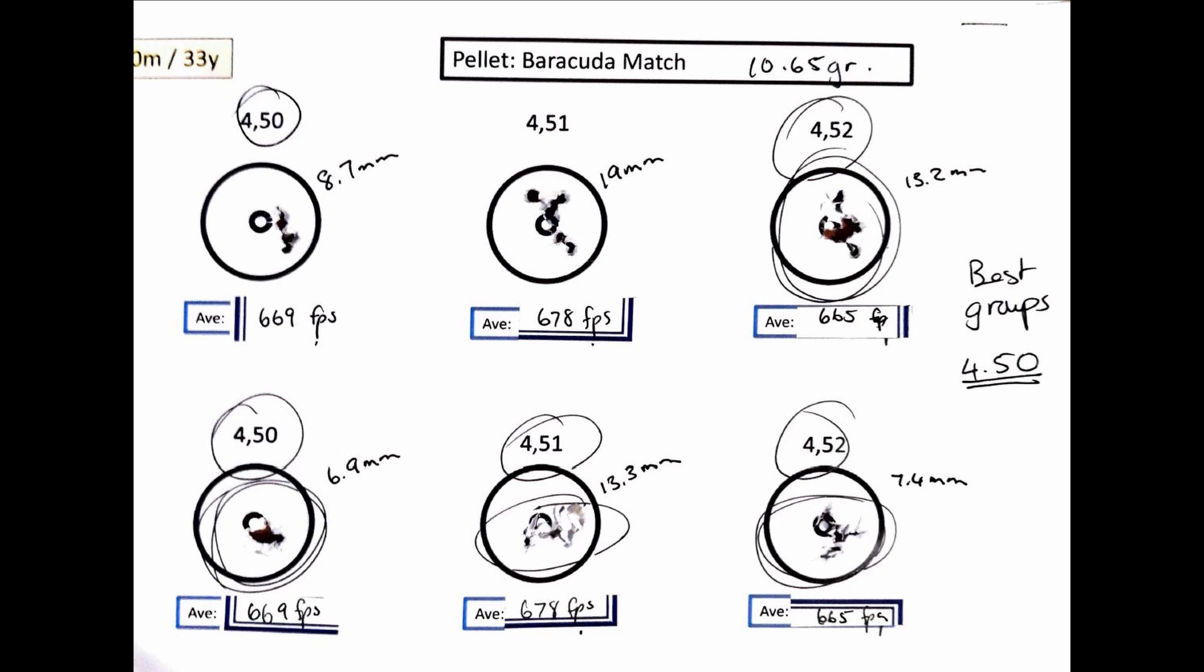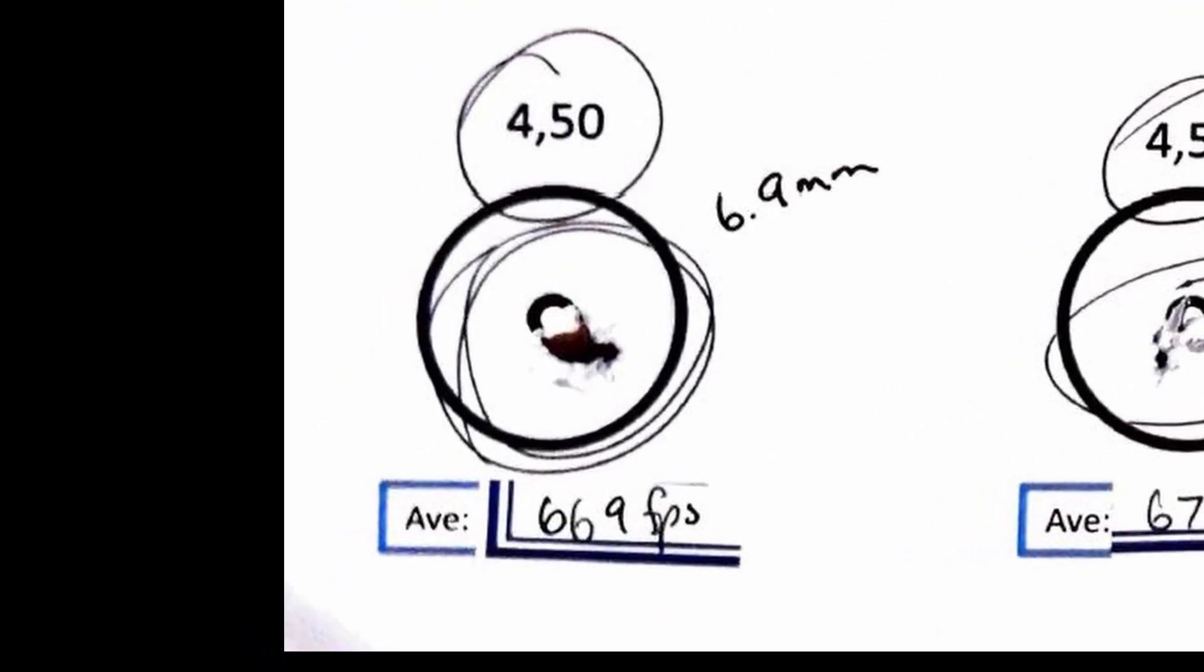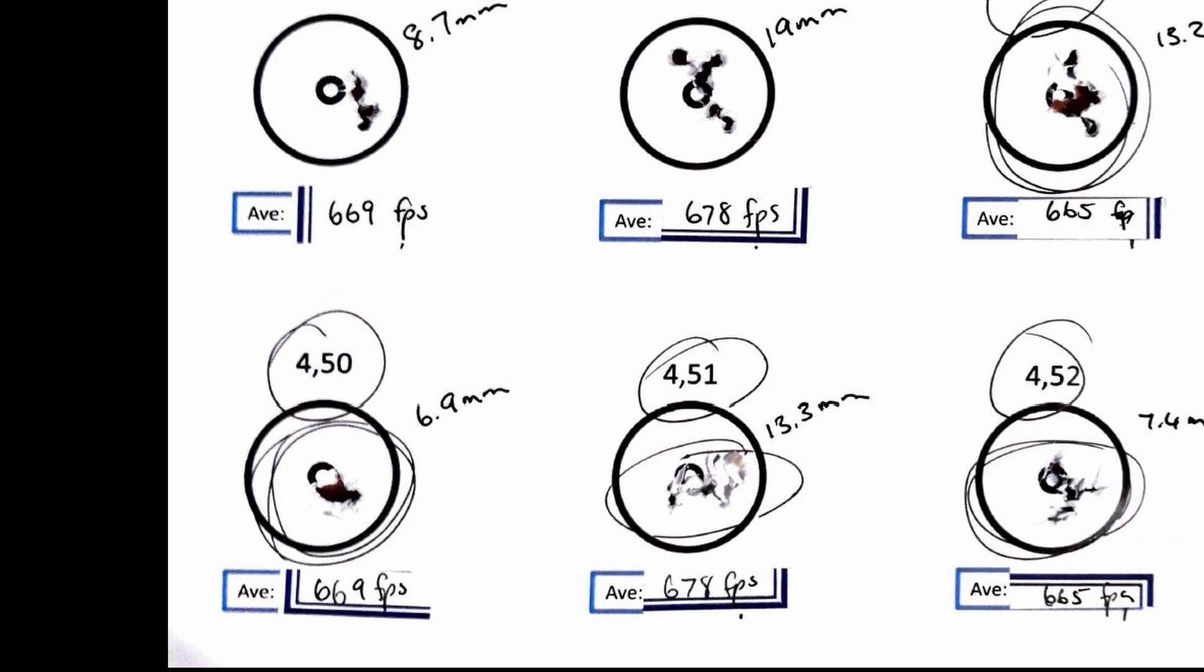In this scenario, one of the conclusions I can make is that the gun is extremely sensitive to the different speeds, and the reasoning for that is the harmonics of the gun. It might be that the 4.50s and 4.52s are better harmonically out of the barrel than just the mere head size that we're looking at. But in this first instance, the best groups were with the 4.50 in the Barracuda Match 10.65 grainers.